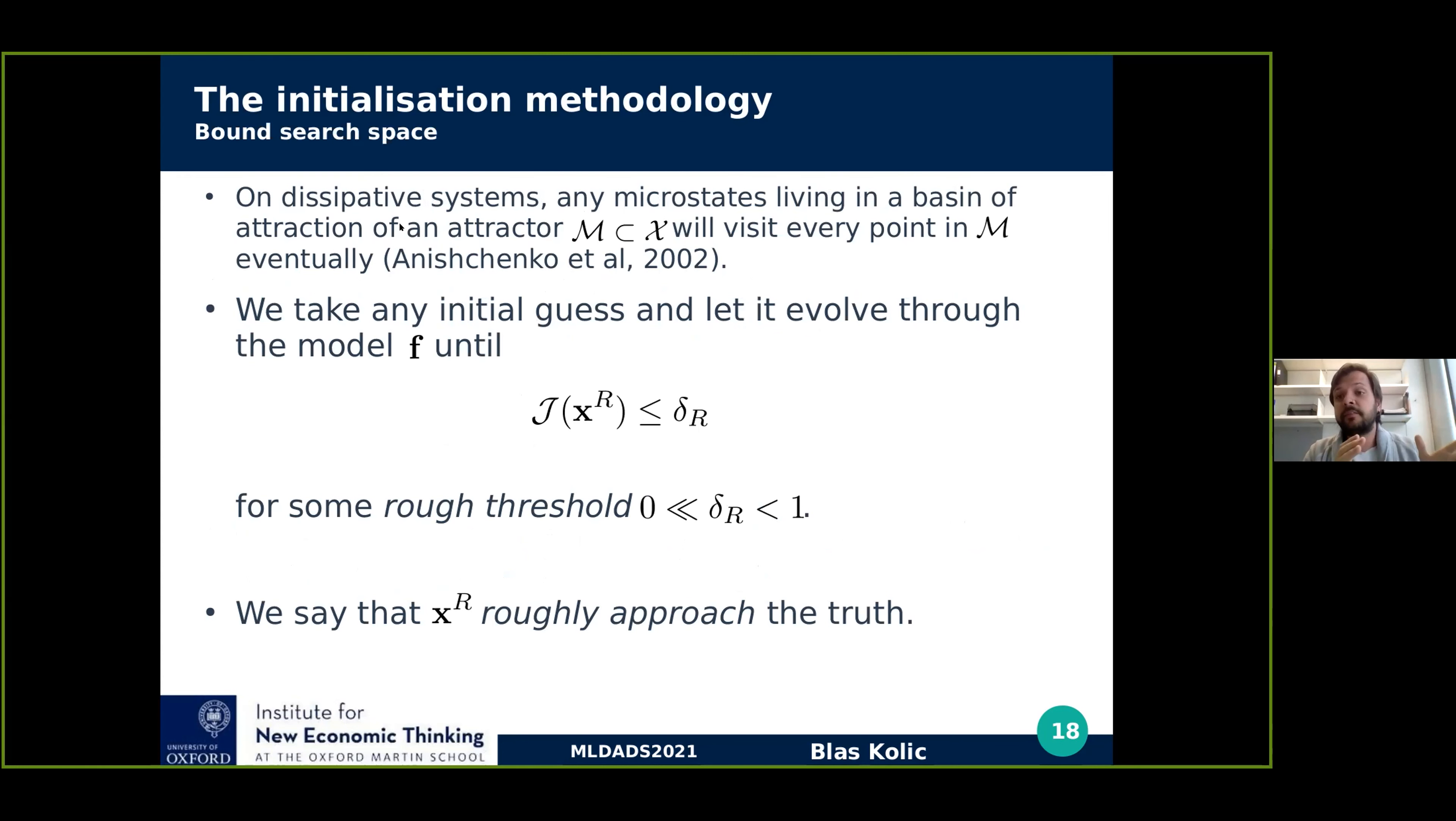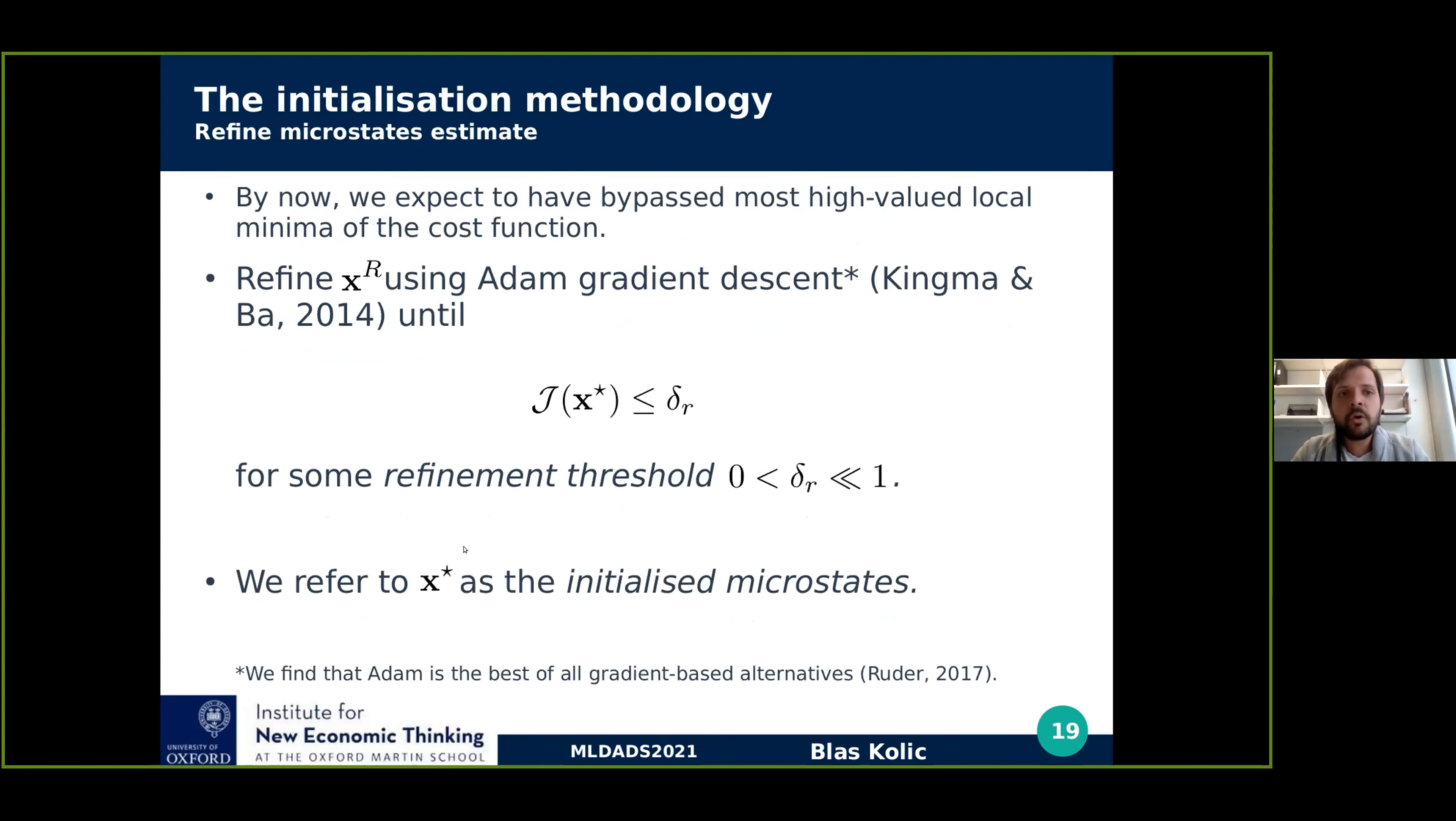Then is the bounding the search space. As I said, dissipative systems are common in real-world problems. In this kind of systems, the microstates living in a basin of attraction will visit every point in the attractor eventually. So we exploit this fact and take any initial guess in the basin and run the model until we roughly approach the observations. This means that until for some point, the cost function is below some rough threshold, which is lower than one, so it's better than a constant predictor, but far from zero, so it doesn't take a lot of time. So we say that Xr roughly approaches the ground truth.